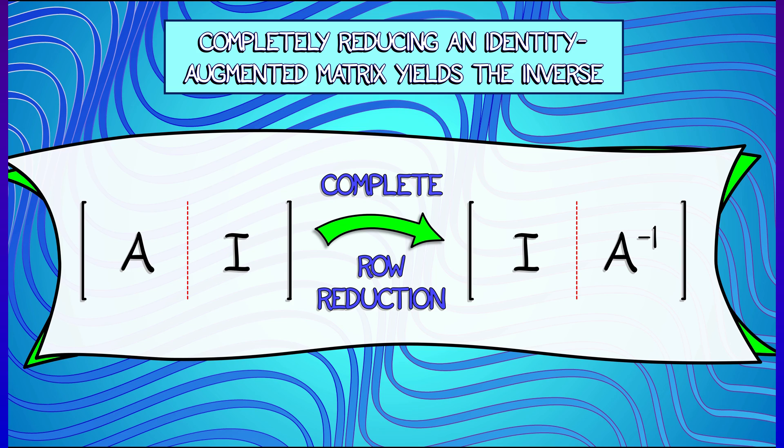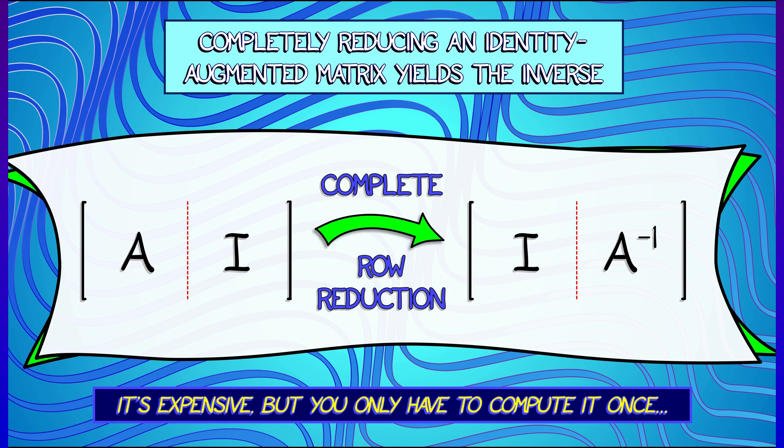And in general, what you do to compute the inverse of a square matrix A is you augment it with an identity matrix on the right, and then just row reduce like crazy. Do a complete row reduction so that you get the identity matrix on the left. That gives you the inverse of A on the right. Is it easy? No, it's computationally expensive, but you do it once and then you've got it.